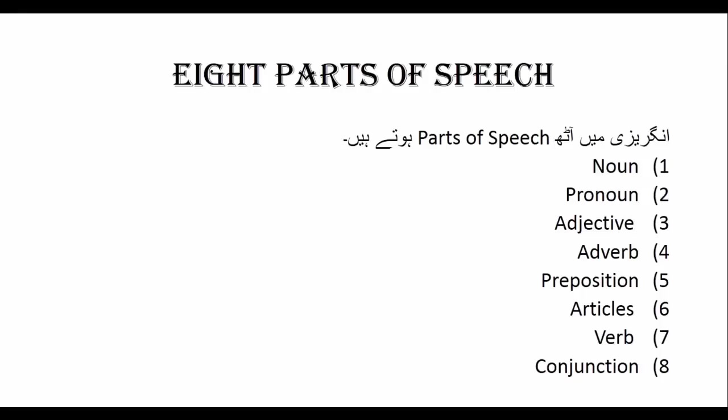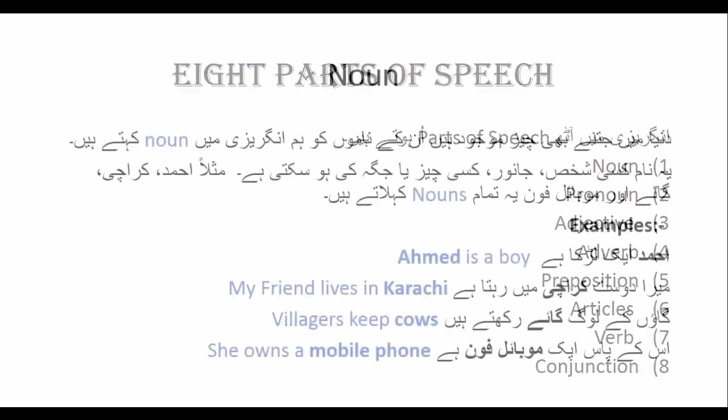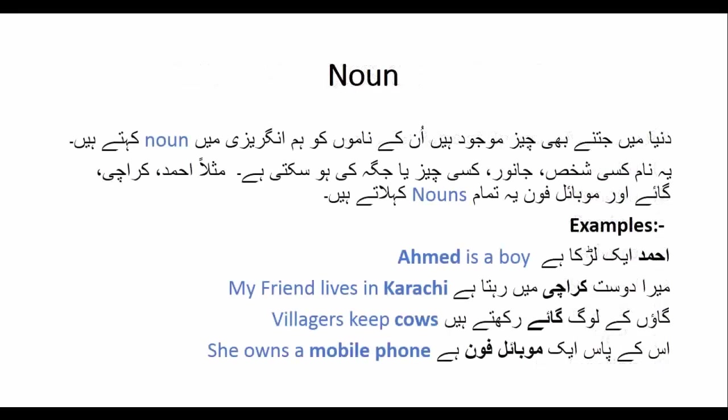تو آئے سٹارٹ کرتے ہیں۔ سب سے پہلے ناؤن — ناؤن کیا ہے؟ دنیا میں جتنی بھی چیزیں موجود ہیں ان کے ناموں کو ہم انگلیزی میں ناؤن کہتے ہیں۔ کوئی ایسی چیز دنیا میں نہیں جس کا کوئی نام نہ ہو۔ یہ نام کسی شخص، جانور، چیز یا جگہ کے ہو سکتے ہیں۔